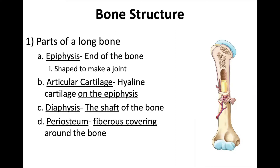The short version is: periosteum is a fibrous covering, just like the fibers of your shirt, wrapped around the bone so that the fibers of your tendons and ligaments can weave into the fibers of this covering. That is what's holding you together — you are actually woven together. That circled area is what I'm talking about.